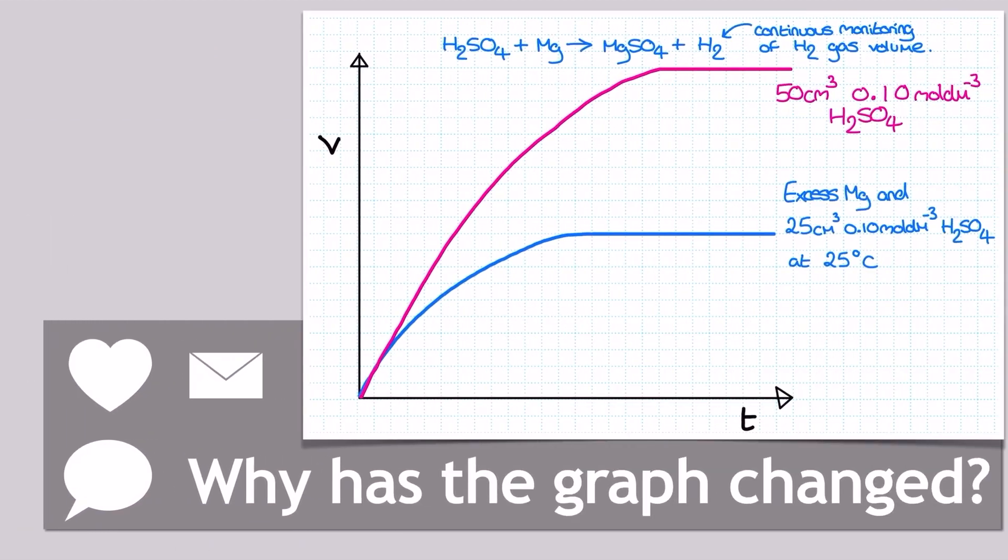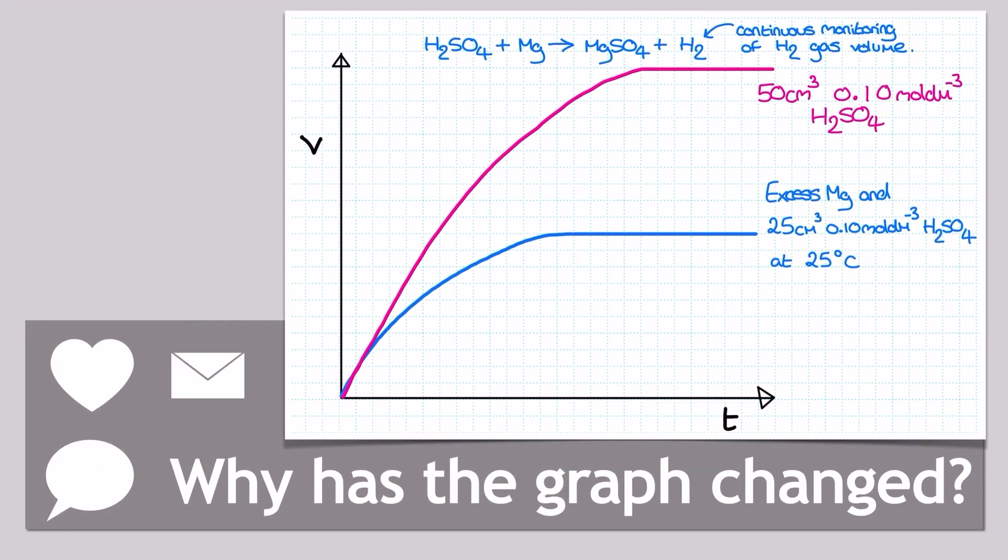Picture the scenario, then. What would happen if we just randomly doubled the volume of the acid we were using? How would the curve change? Well, check out the pink line we've got on here. Because in scenarios like this one, watch out for that final volume of hydrogen gas being collected.